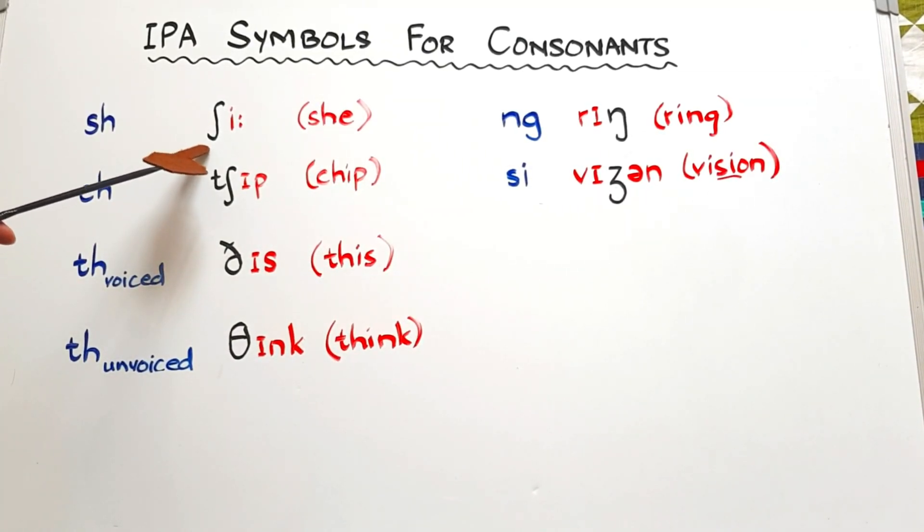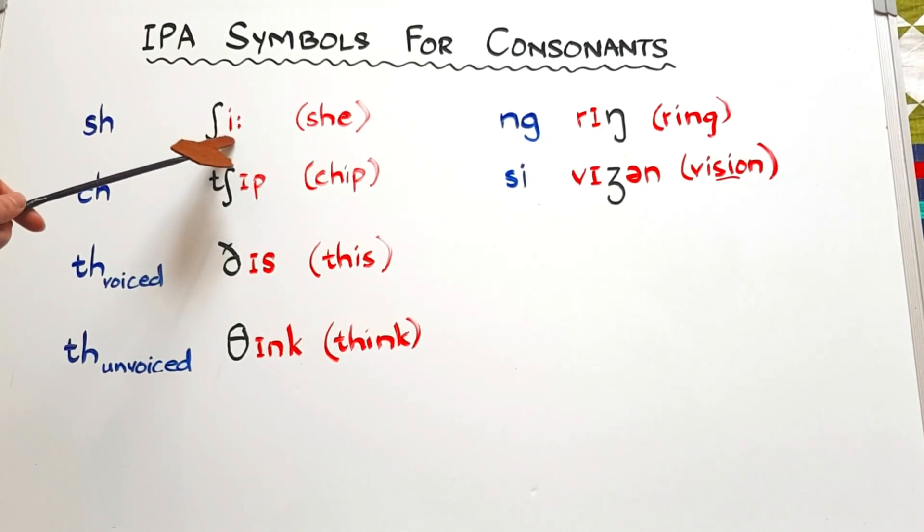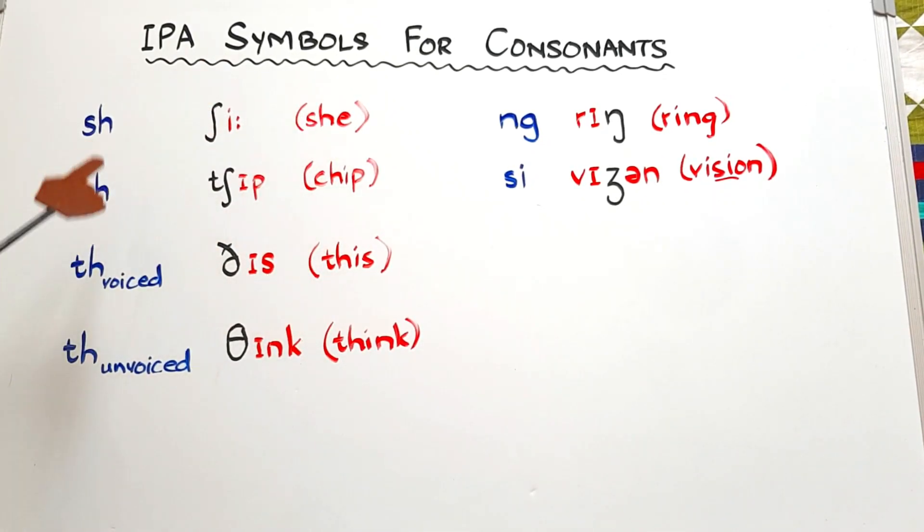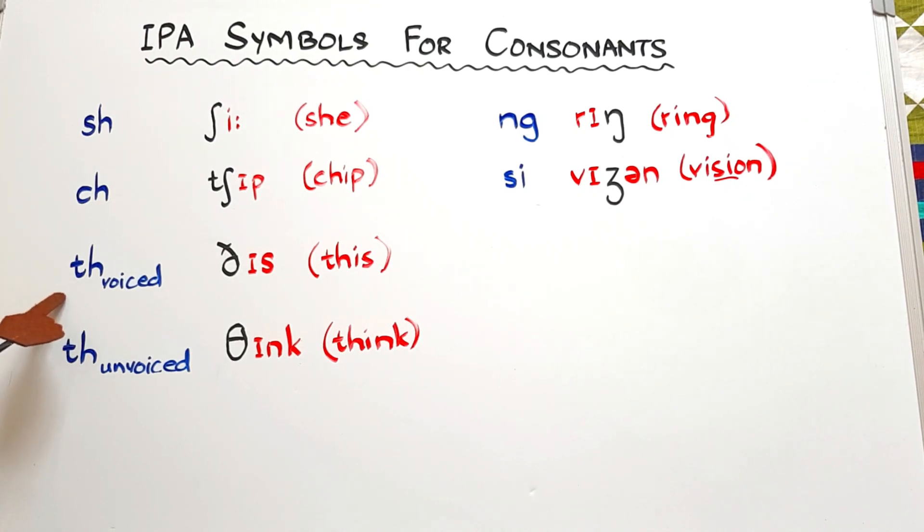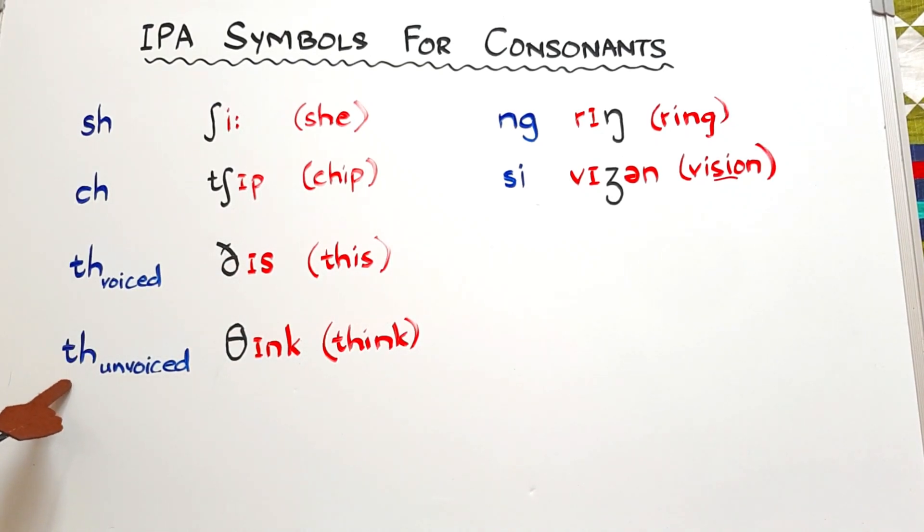So this is the digraph and this is how we write it in IPA form. The long E sound, 'she'. This is how we write it, and this is 'chip', the short A sound. Now TH have two pronunciations. One is the voiced one - that is 'this' - and the other is the unvoiced, TH as in 'think'. In India and Pakistan we also say it as TH and this one as TH. So this is 'this' and this is 'think'.